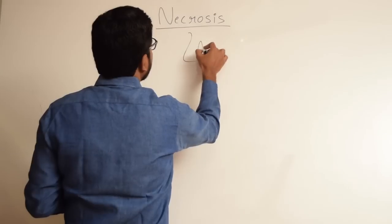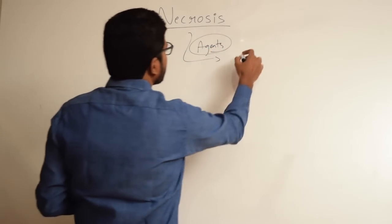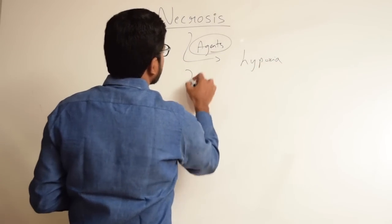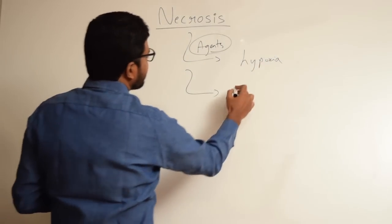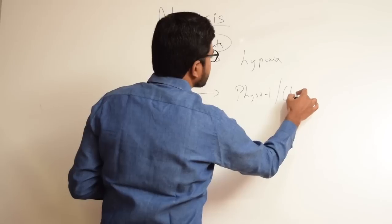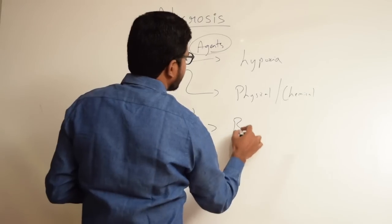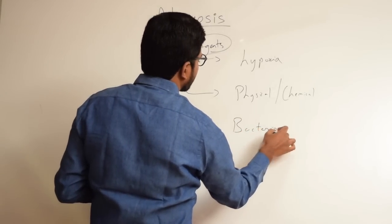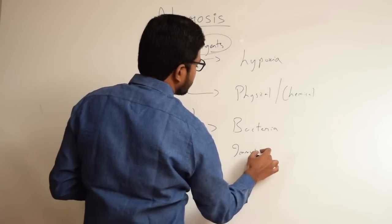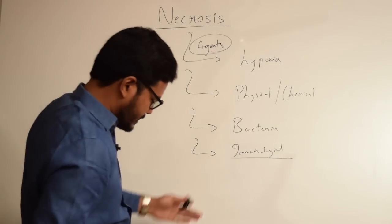Different agents can trigger and cause necrosis. It can be hypoxia, that is low oxygen tension. It can be a physical agent or a chemical agent, or it can be bacterial-related or immunological-related. So we have several agents which cause necrosis.